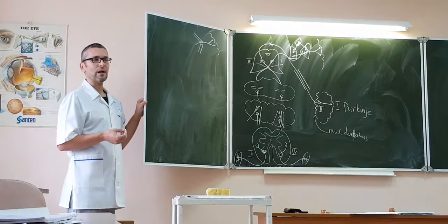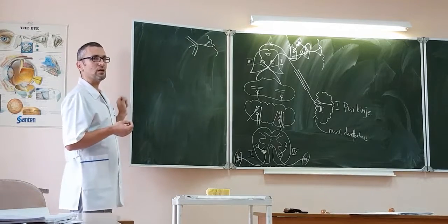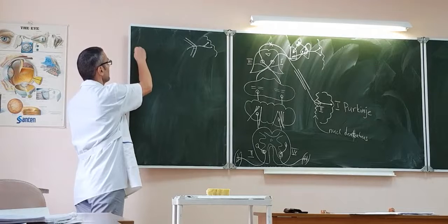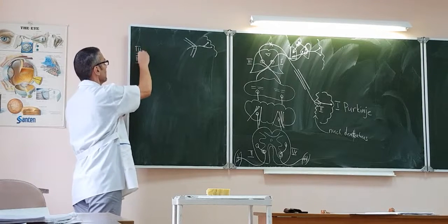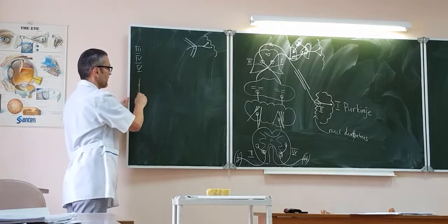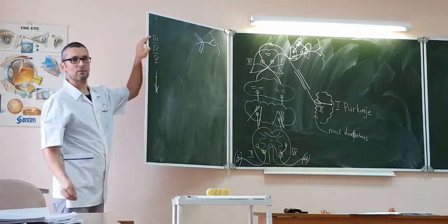If you remember that cranial nerves are located in the brainstem beginning from above, here will be third, then fourth, then fifth, and like that they descend. What are nuclei of third and fourth cranial nerves?